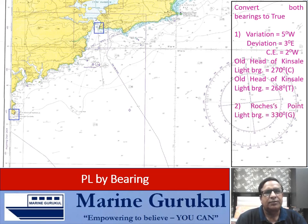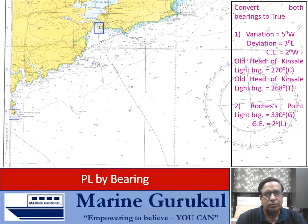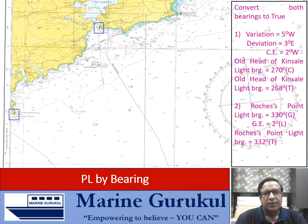For Raushe's Point light, the gyro bearing is 330°. Gyro error is 2° low, meaning gyro values are less than true. Applying the correction, the true bearing of Raushe's Point is 332° true.